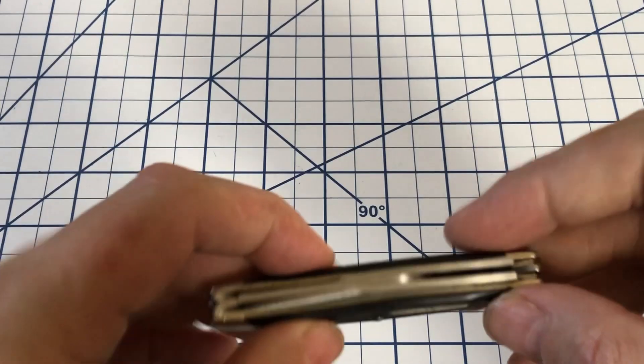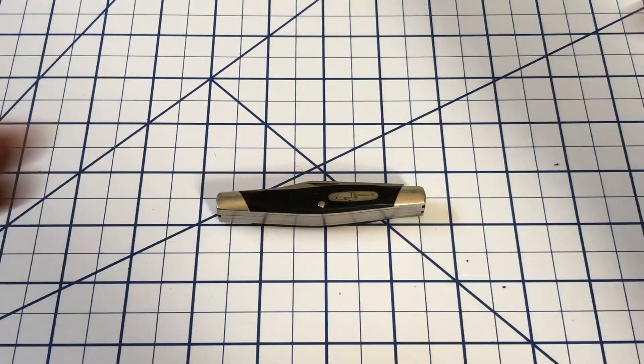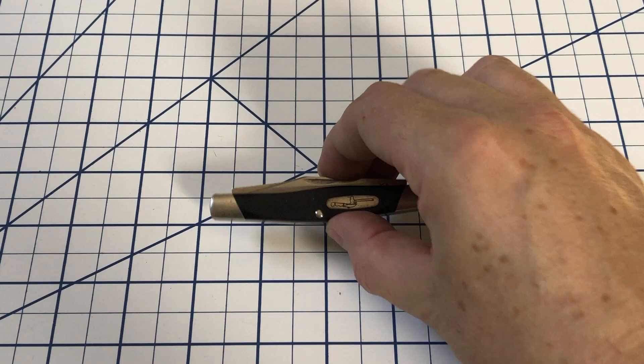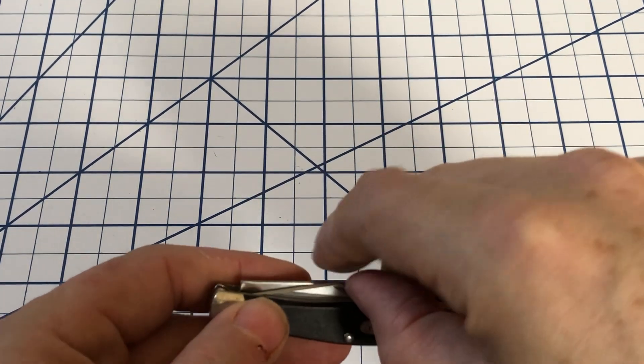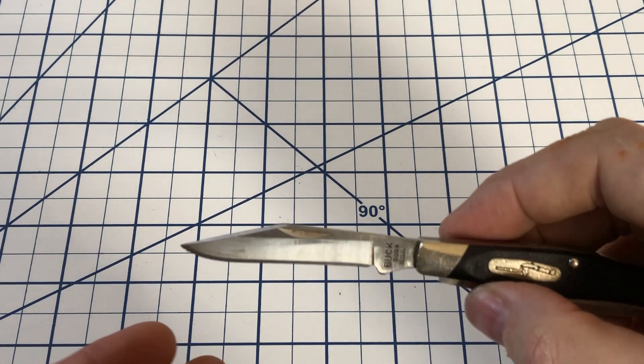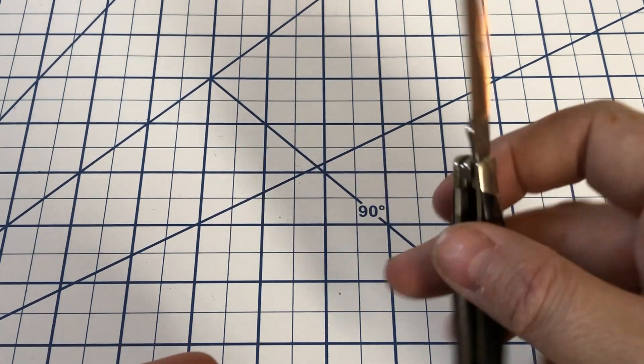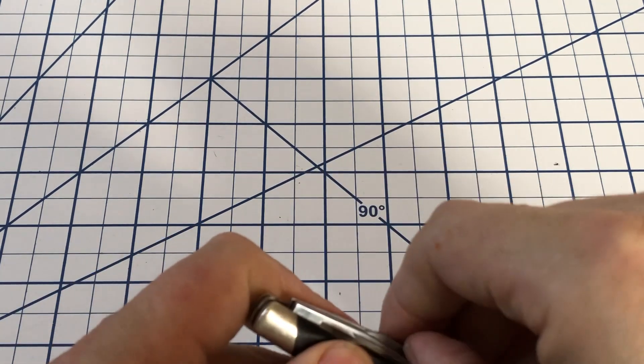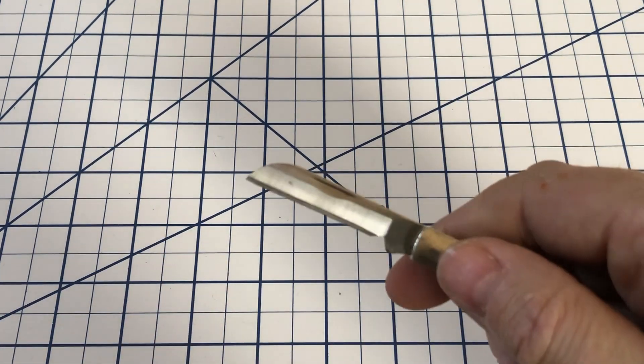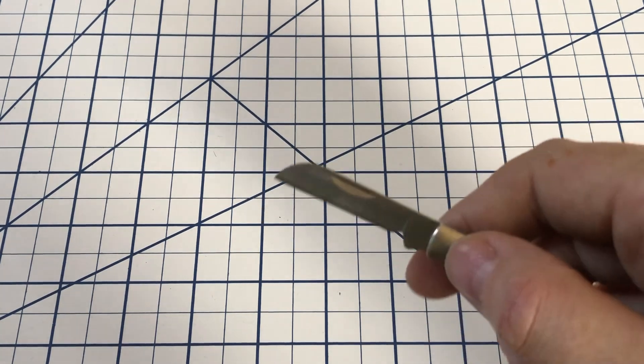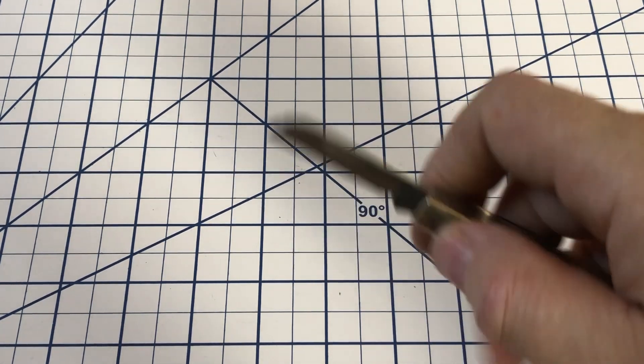Now Stockman patterns have been around since the 1880s, 1890s, and they typically are a three bladed knife comprising a main clip point blade, which is sort of a general purpose blade. A sheep's foot blade, which could be used for trimming hooves. It also makes a very good box opener these days.